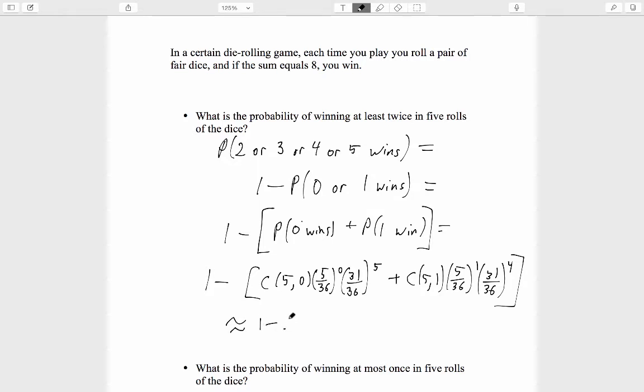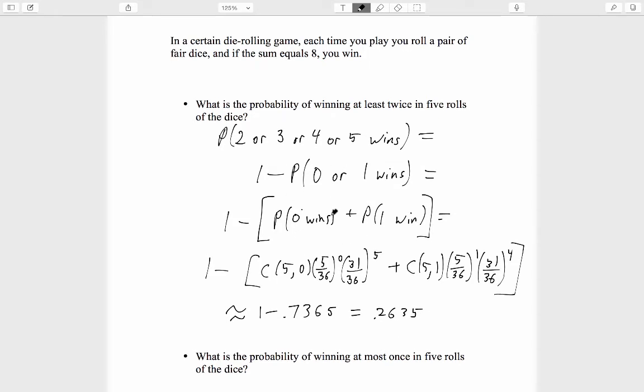When we compute, this turns out to be approximately 1 minus 0.7365. That means the 0.7365 is the sum of these two probabilities in brackets here, and therefore the probability we're looking for, 1 minus that, is approximately 0.2635. The overall strategy here is actually an older strategy of ours from earlier in this course. What's new is how we compute these individual probabilities once we've boiled it down to them.